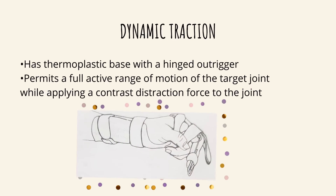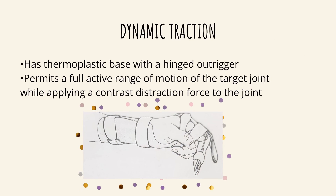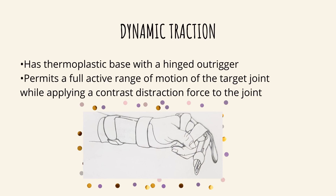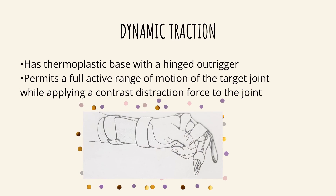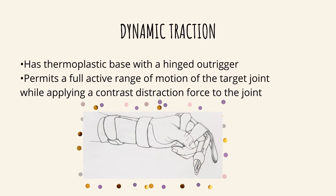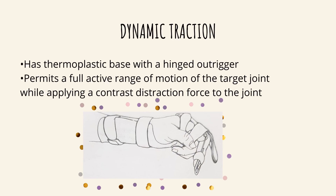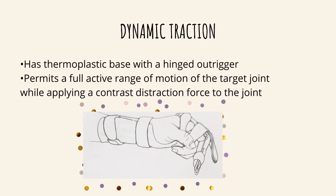The next category is the dynamic traction orthosis. It has a thermoplastic base with a hinge outrigger. It permits a full active range of motion of the target joint while applying a constant distraction force to the joint. An example is a modified dynamic traction splint for unstable intra-articular fractures of the PIP joint.